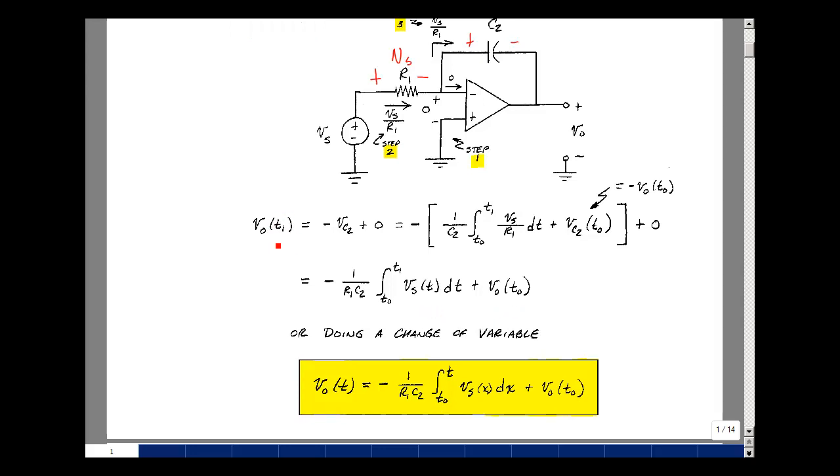Suppose you want to do a change of variable. I'll just make this T. The V out of T is equal to minus 1 over R1C2, the integral from T0 to T, and then we have to change the variable here. We can't use the same symbol. It means something very different in calculus, so we'll just use a dummy variable x, V sub s of x dx, plus the initial condition of the output of the op-amp.